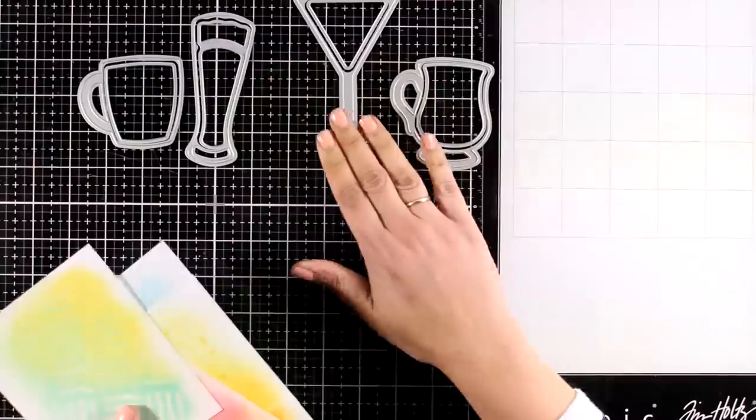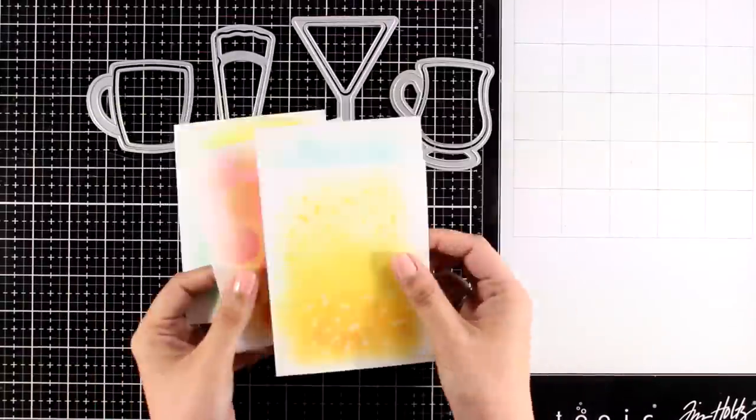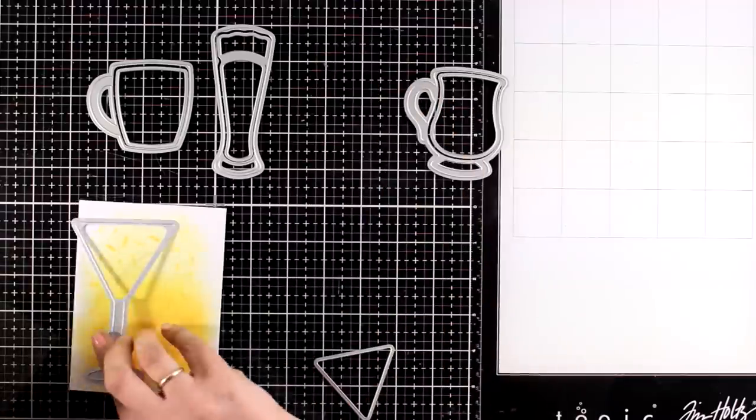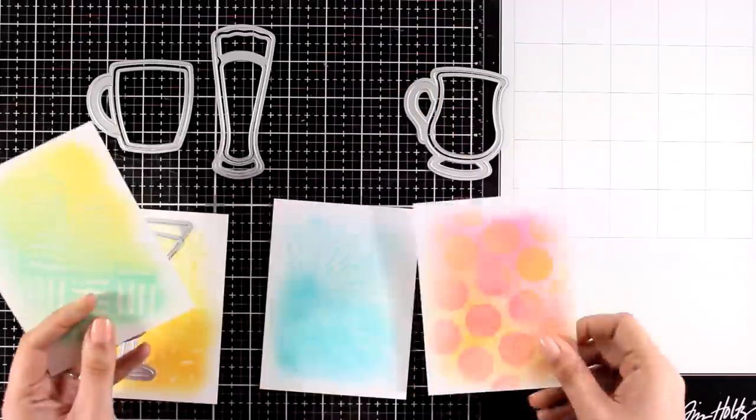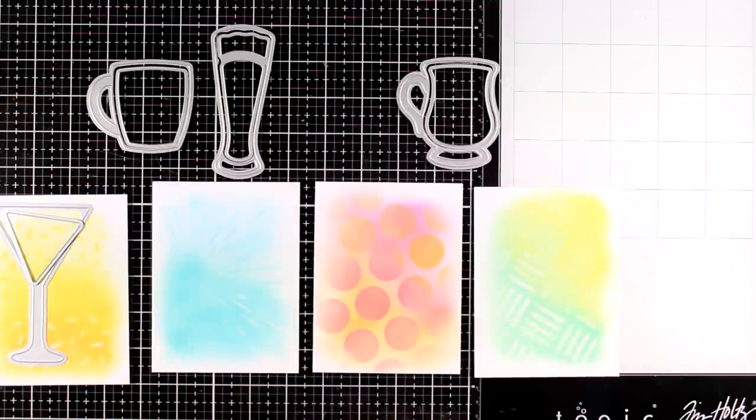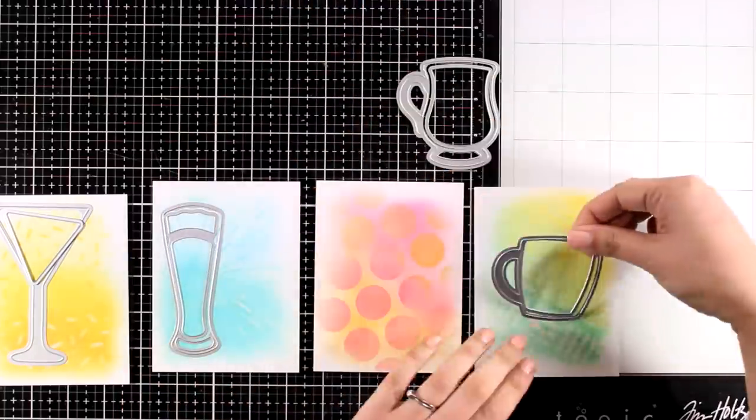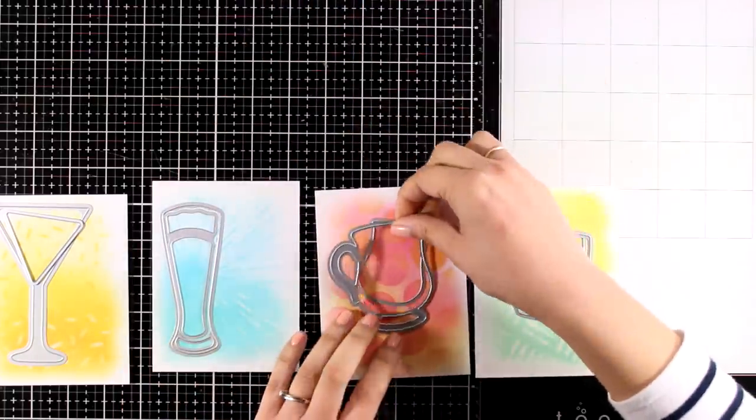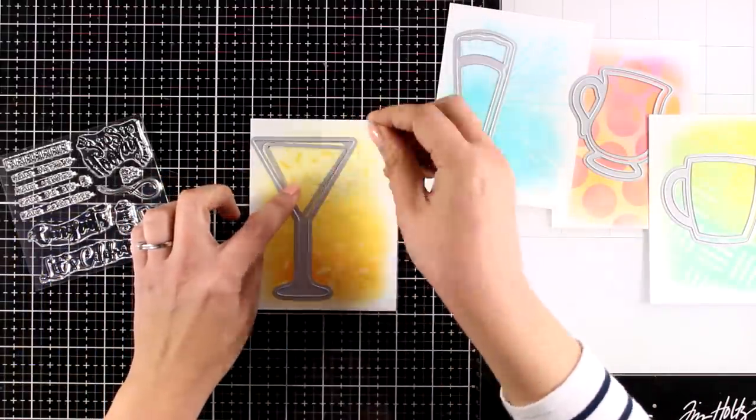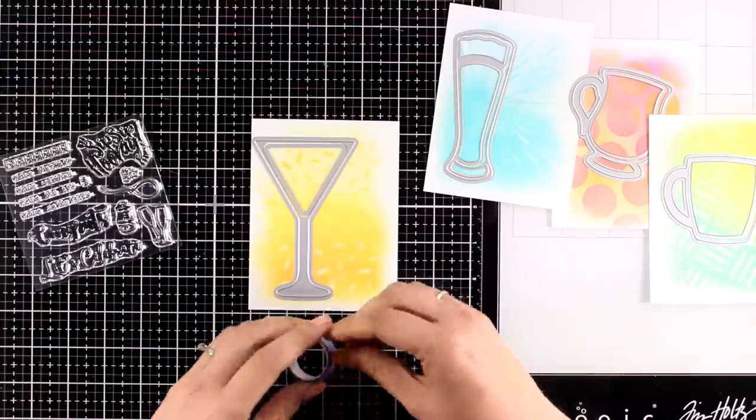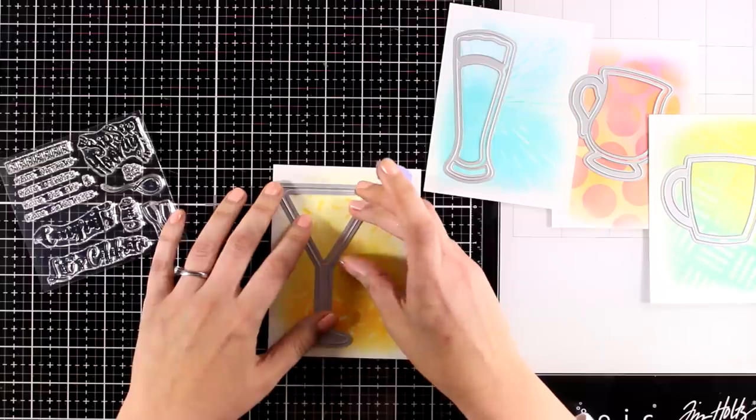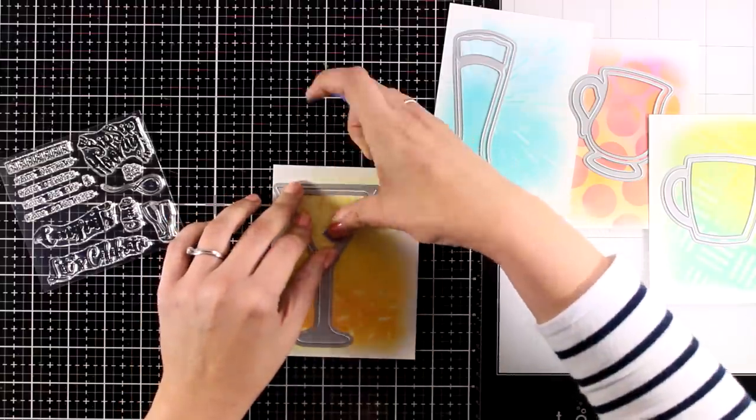Now I am going to bring in the dies from my shaker sets and I am just going to try and decide which is going where. At this stage I am trying to think of what color the beverage is going to be on the inside of the glass. This way I will try and mix and match the colors so that the content of the glass is going to stand out against the background.